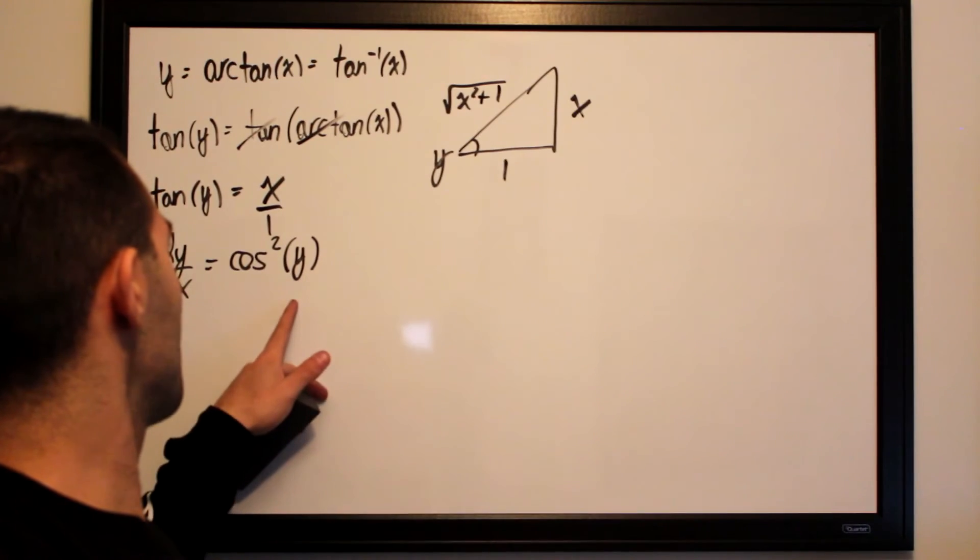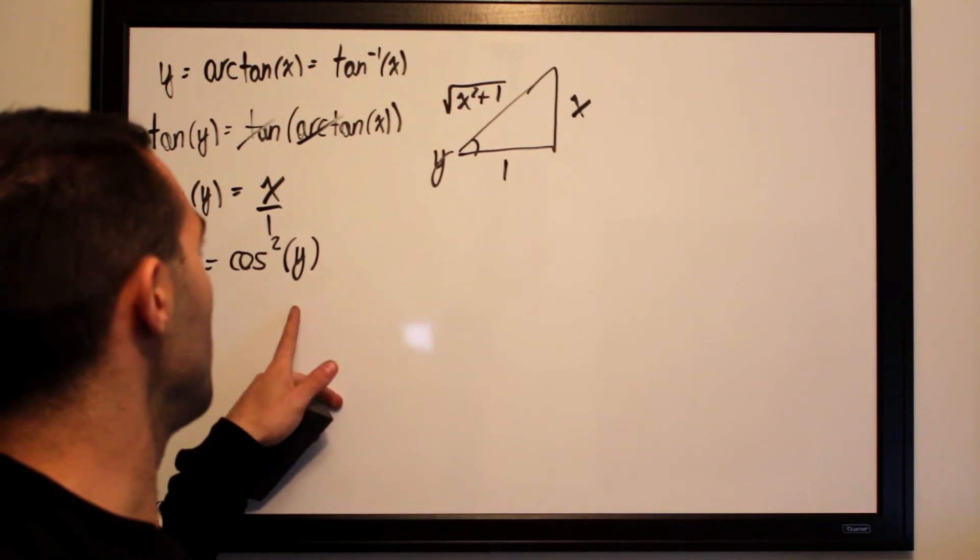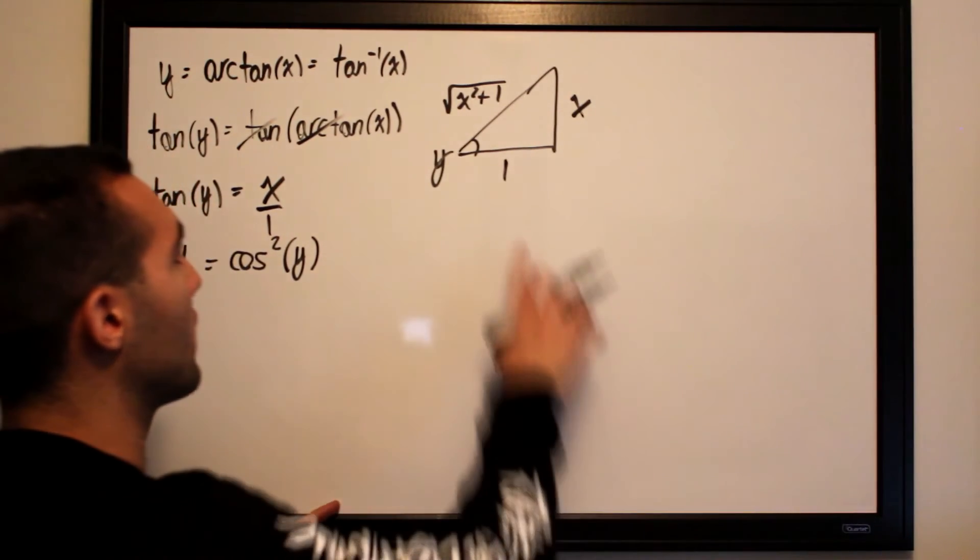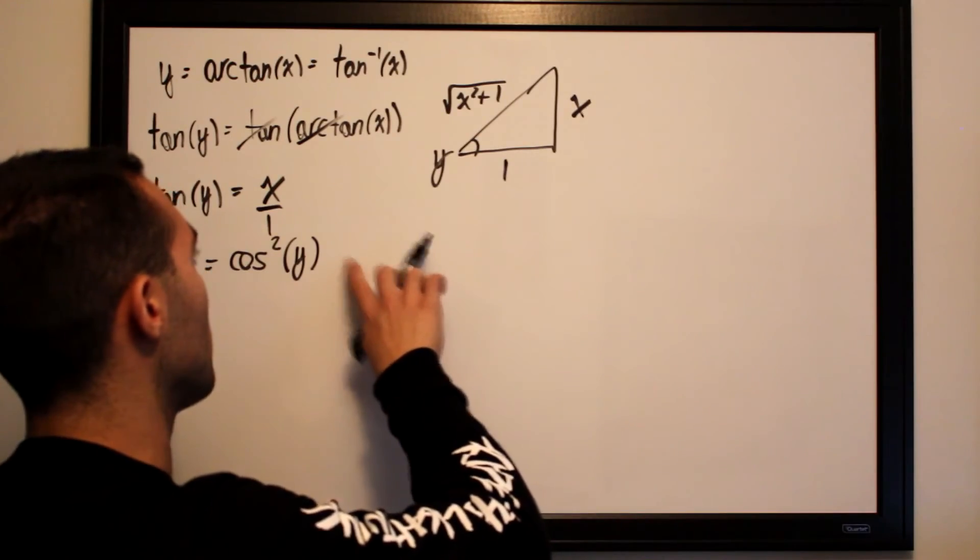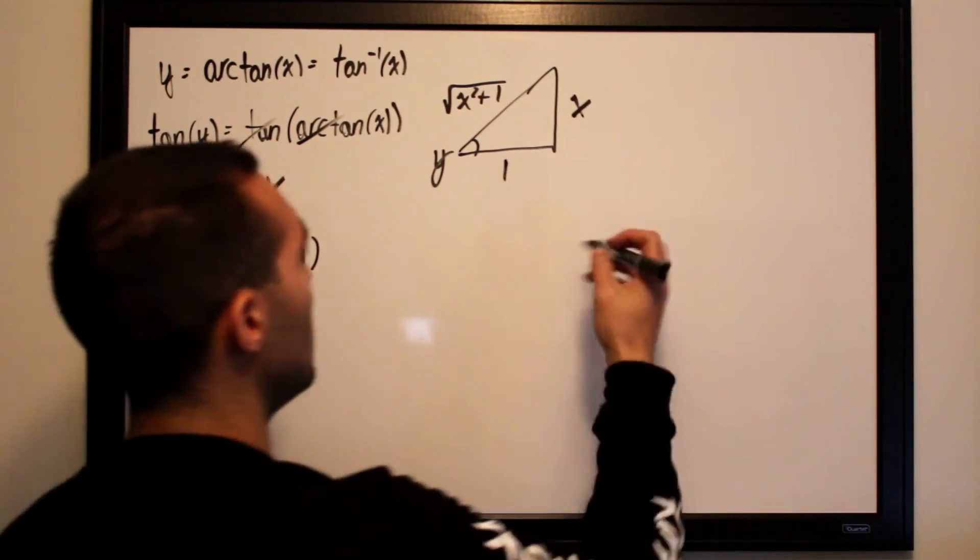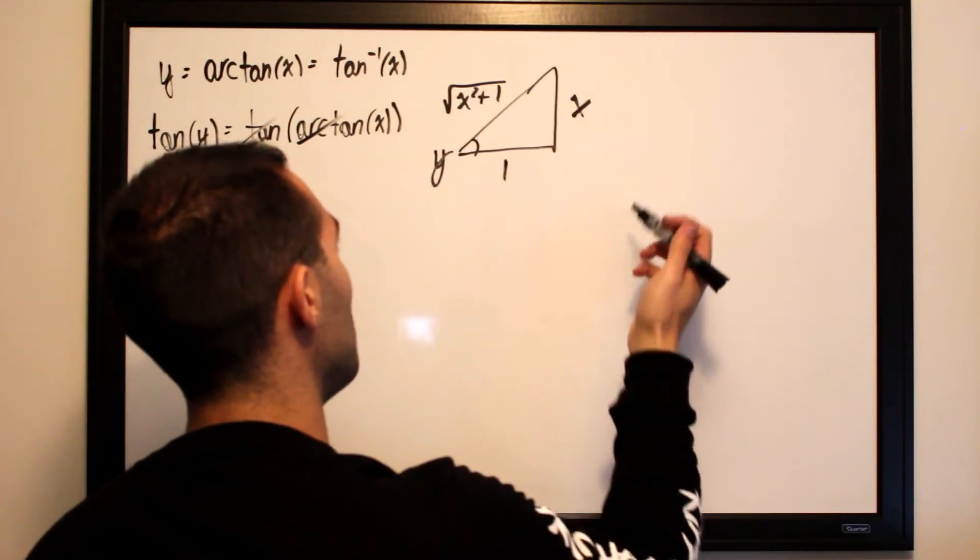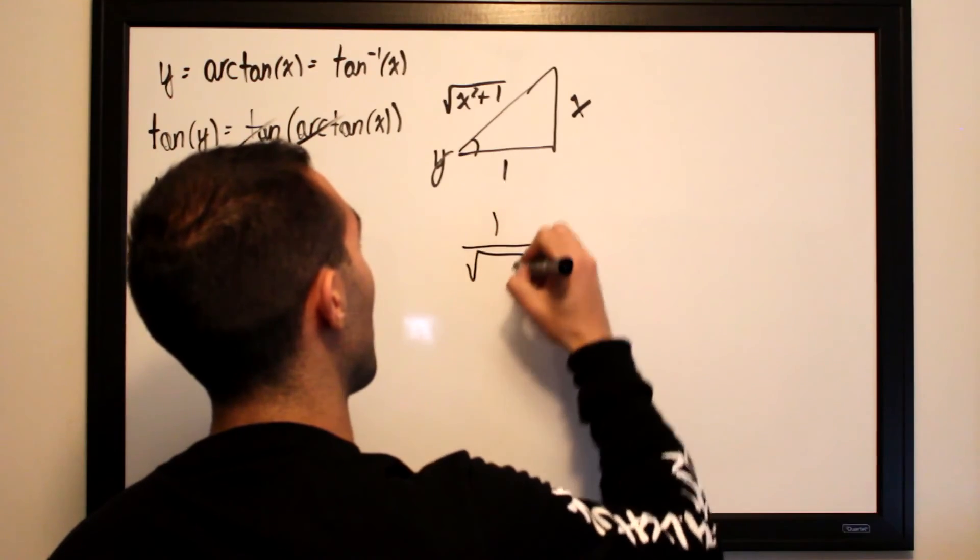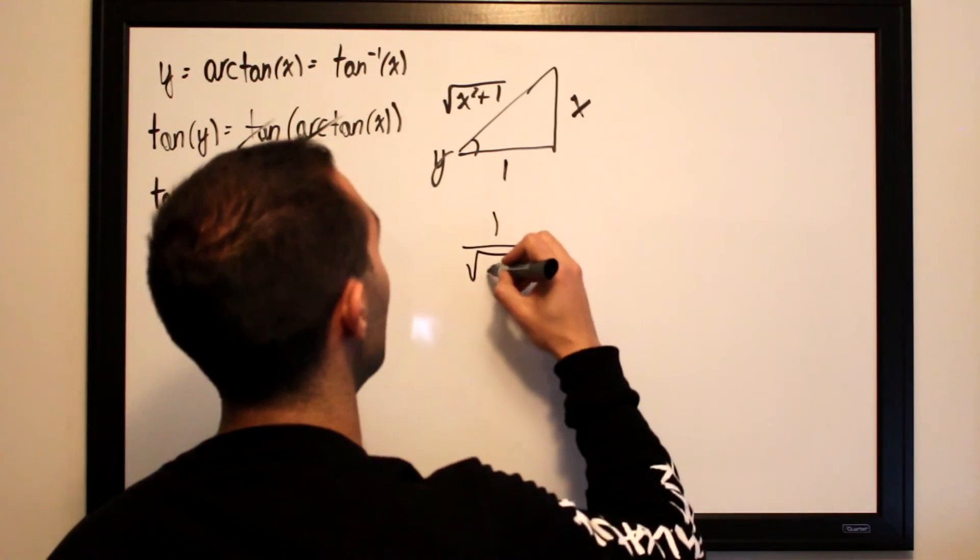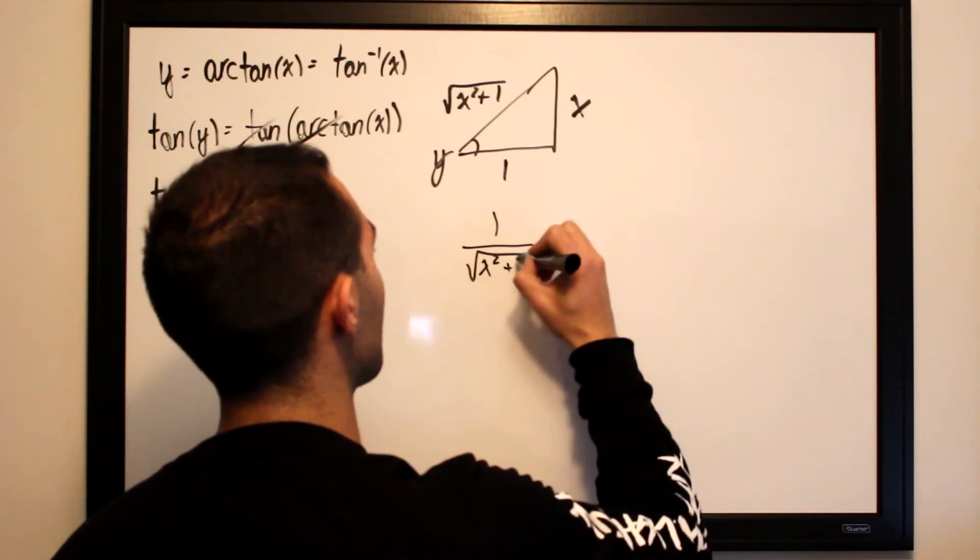So cosine squared of y is simply going to be equal to—if we take the cosine of this triangle here, cosine of y in this triangle—cosine is adjacent divided by the hypotenuse, which is 1 over the square root of x squared plus 1.